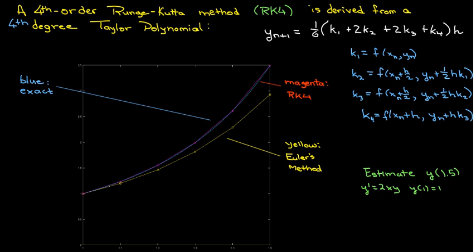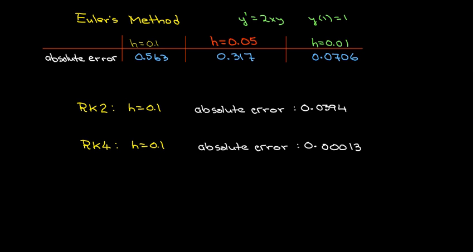In this graph, we have the exact curve, we have the original Euler's method curve for comparison, and you can see that the points from the Runge-Kutta method, which are the tiny magenta triangles, they land exactly on top of the curve as far as this graph can tell. And in fact, if we look at the absolute errors, remember from Euler's method, to even get down to below 10% error, we had to choose h equals 0.01.